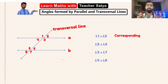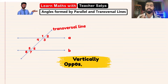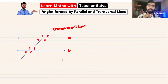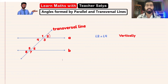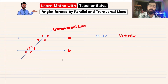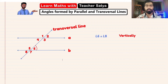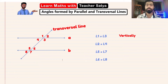The next one we'll be talking about is what we call vertically opposite angles. They will also be equal. From the word 'opposite' itself, we are looking for the angles that are opposite. Angle 1 is vertically opposite to angle 3, and angle 2 is vertically opposite to angle 4. At the bottom, angle 5 is vertically opposite to angle 7, and angle 6 is vertically opposite to angle 8. Vertically opposite angles will always be equal.